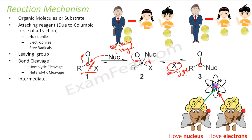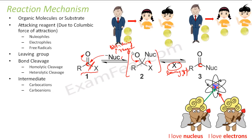We will discuss more about this. Then we have the intermediate, which happens for a very small fraction of time but it does happen. Among intermediates we have carbocations, carbanions — this is an ion with a negative charge — and we also have free radicals as part of intermediates, and carbenes are also one type of intermediate. And then we have the products.